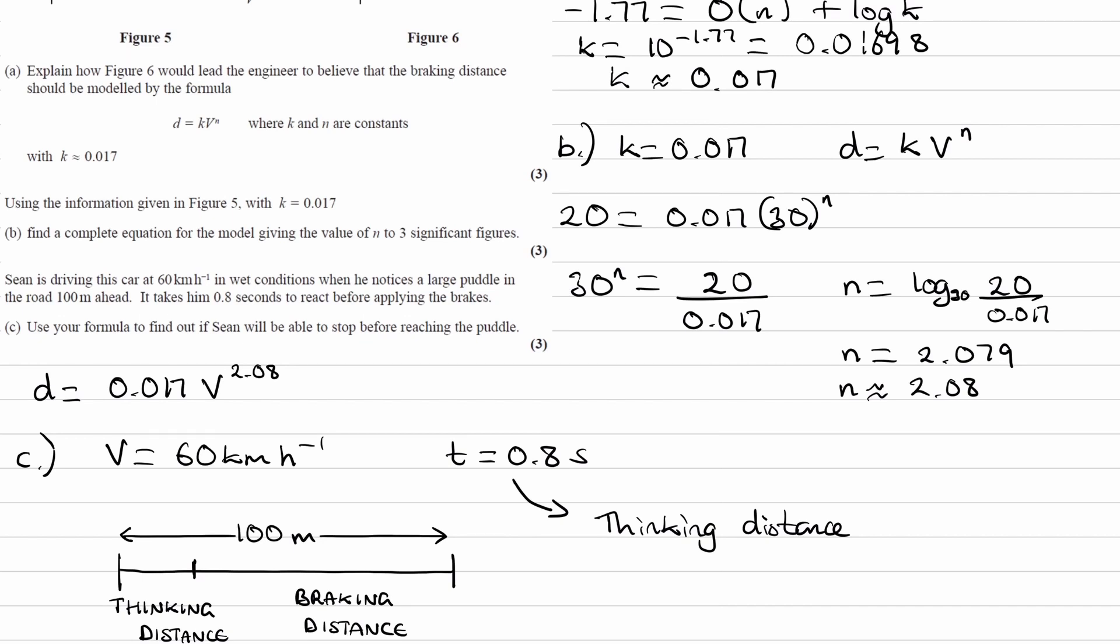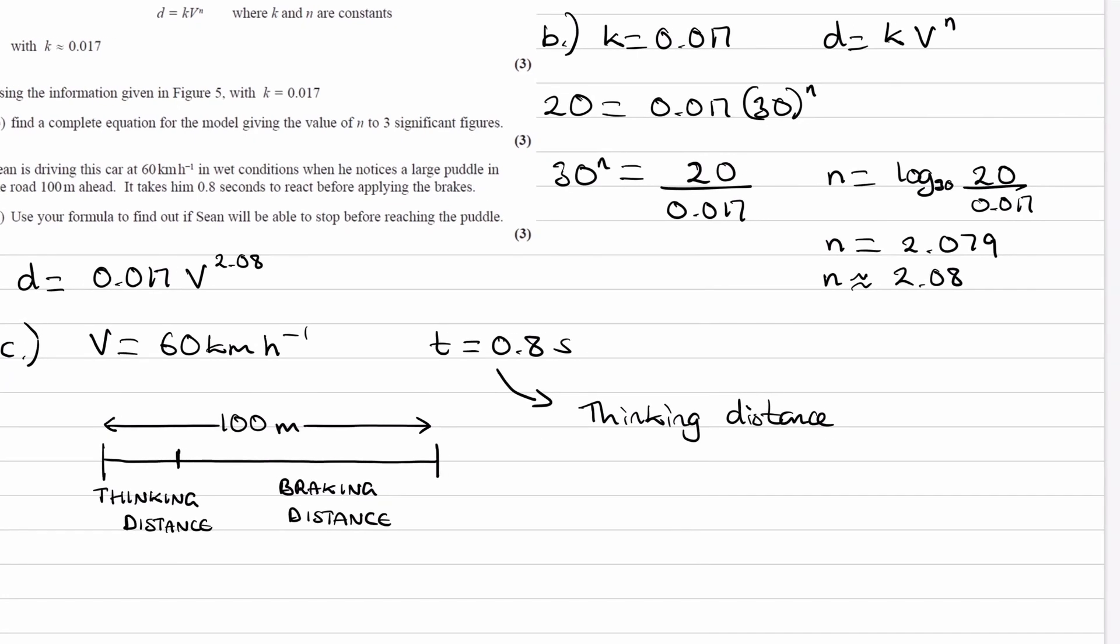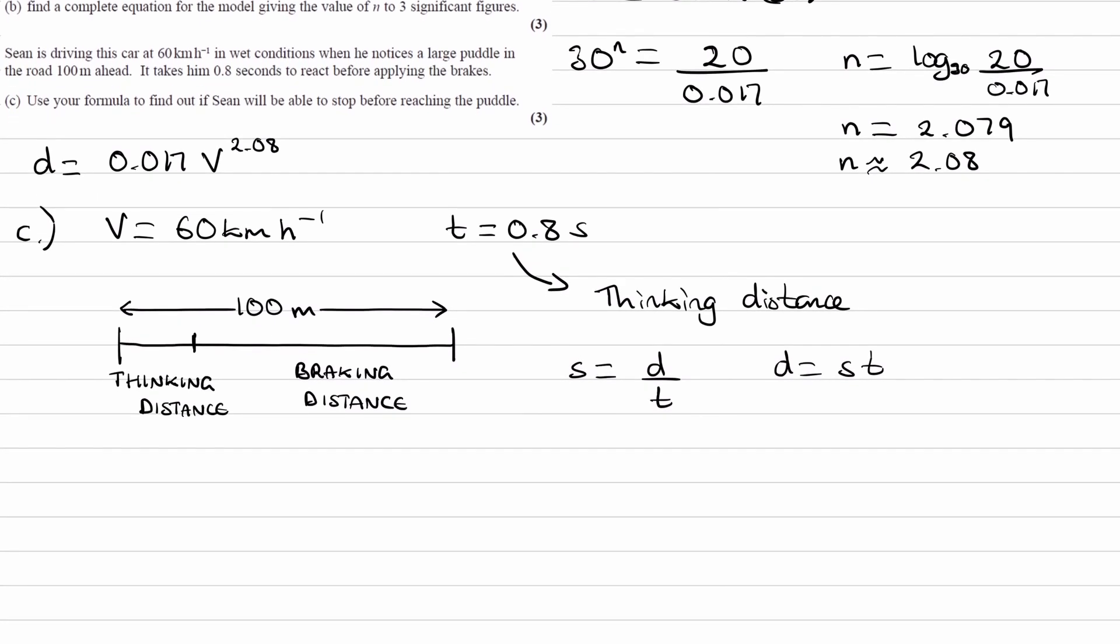Okay, so let's start with the thinking distance. That's probably the easy thing to start with. We can just use speed equals distance over time. The distance will then be the speed times time. We know the speed is 60 kilometers per hour. We want to convert that to meters per second to multiply it by seconds, which is the unit for time, to then get a distance in meters.